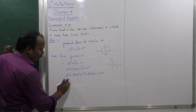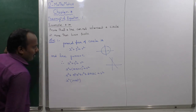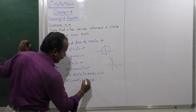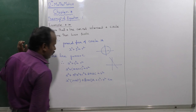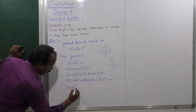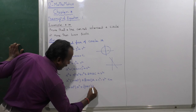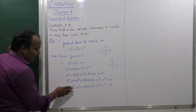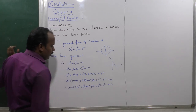Collecting the x squared terms: (1 plus m squared) x squared, plus 2mc times x, plus c squared minus r squared equals zero. This is of the form ax squared plus bx plus c equals 0.